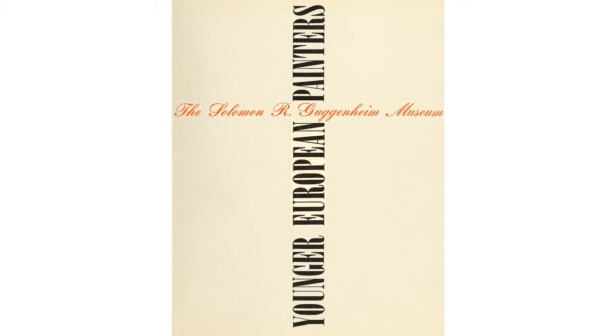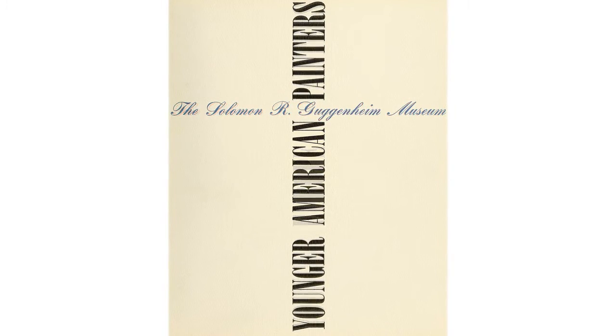Sweeney presented two exhibitions: one in 1953 called the Younger European Painters Exhibition, and then in 1954 Younger American Painters. He really conceived of them as one exhibition split in two parts, and he called both a selection. He used these exhibitions as a vehicle to introduce what was going on in the contemporary scene in Europe and in the U.S. to the audience in New York, and also as a way to build the collection.